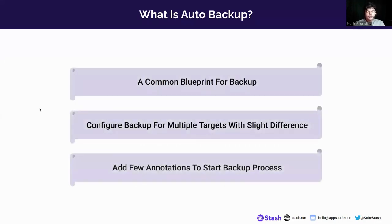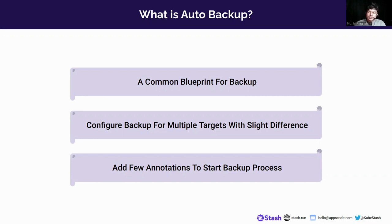Let's start with the basics. What is autobackup? Qubestash uses one-to-one mapping between backup configuration and target. Whenever we want to backup a target like workload, PVC or database, we have to create a backup configuration object. This could become tiresome when we are trying to backup similar types of objects and the backup configuration has only slight differences. To mitigate this problem, Qubestash provides a way to specify a blueprint for the backup configuration object via the backup blueprint CRD. In Qubestash terms, we call this process autobackup.